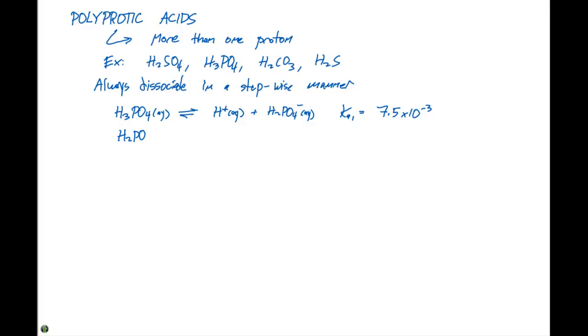The H2PO4 minus can then be in equilibrium with H plus in aqueous solution plus HPO4 two minus ions in solution. The Ka2, or the equilibrium constant for that second proton to fall off, is going to be 6.2 times 10 to the minus 9.